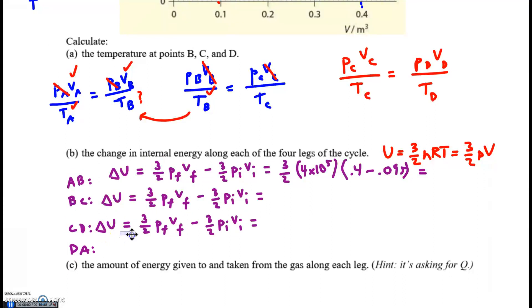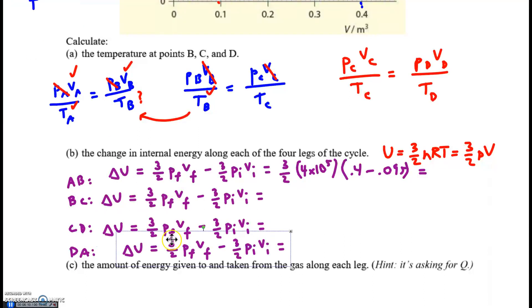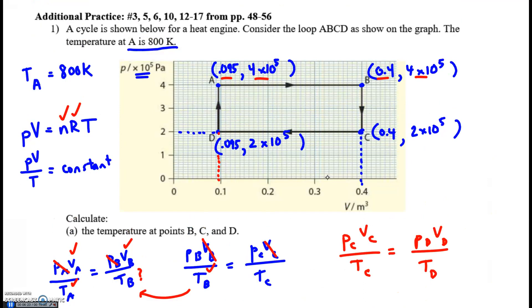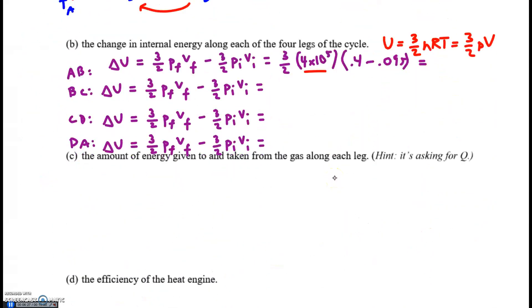We are going to do the exact same thing for each of these legs. And clearly there's always going to be something you can factor out, because in every single process, pressure was constant or volume was constant. One or the other was constant for every one of those processes.